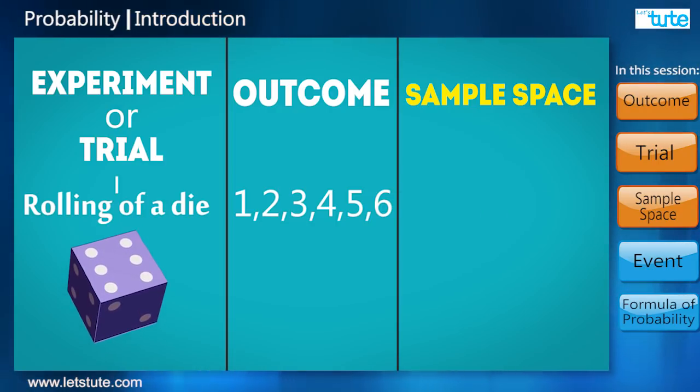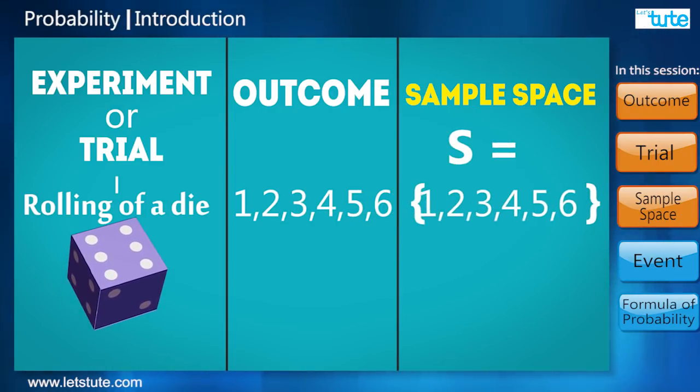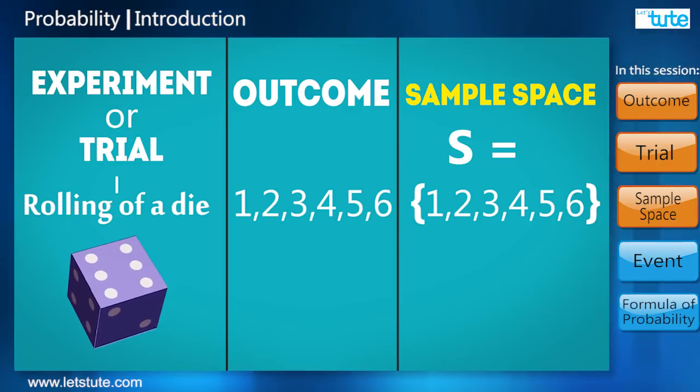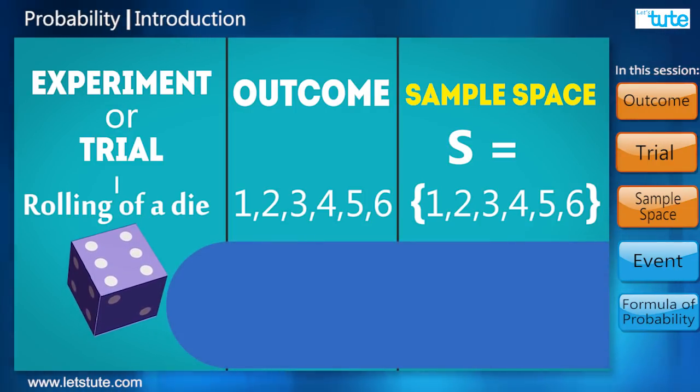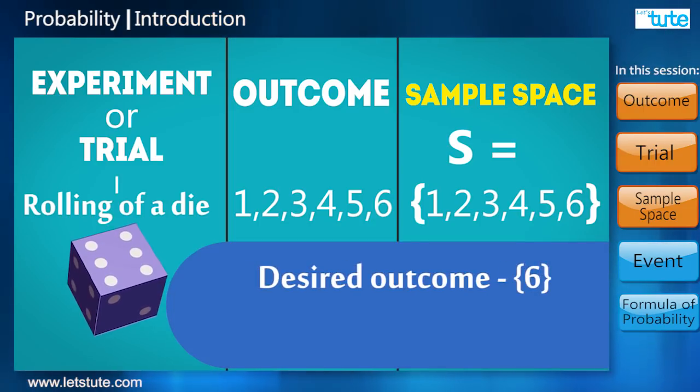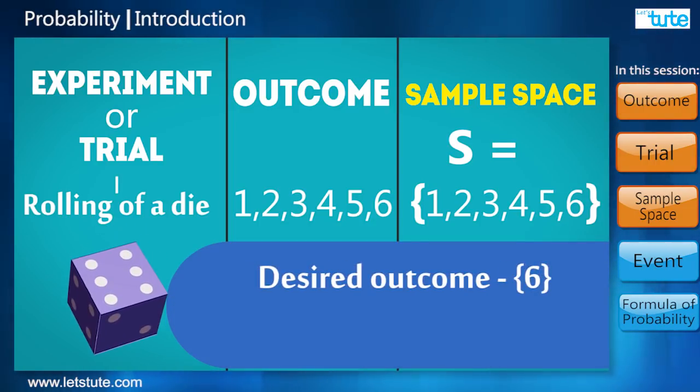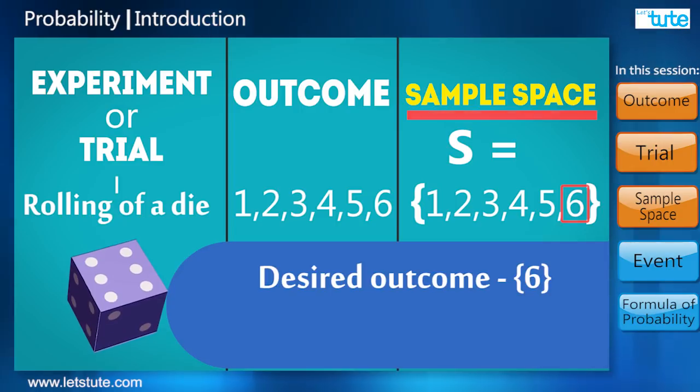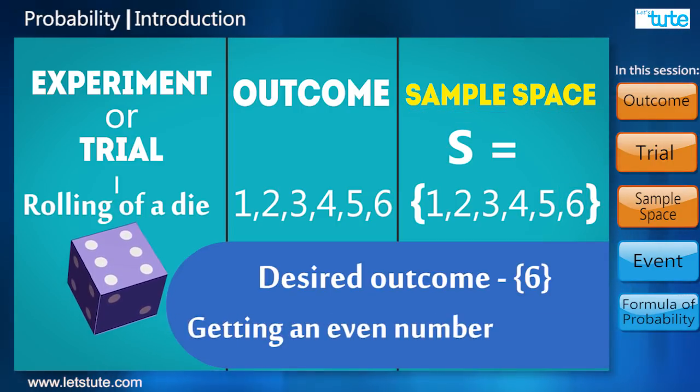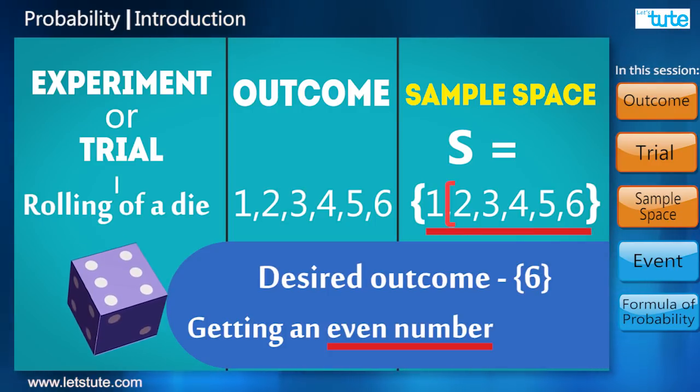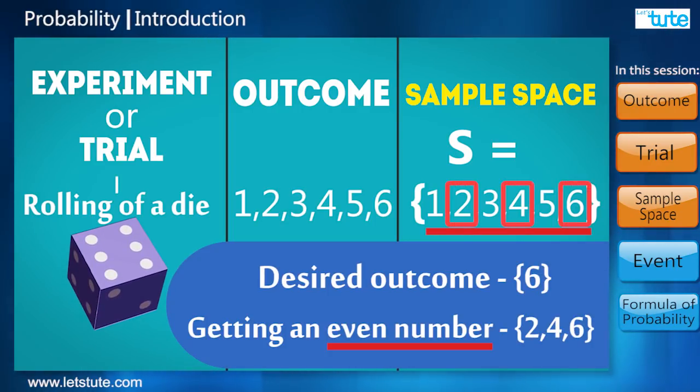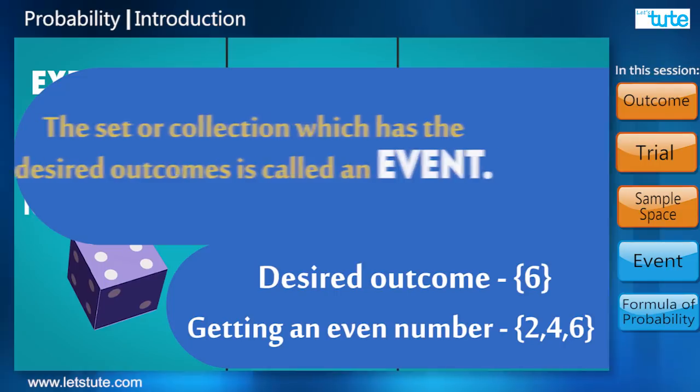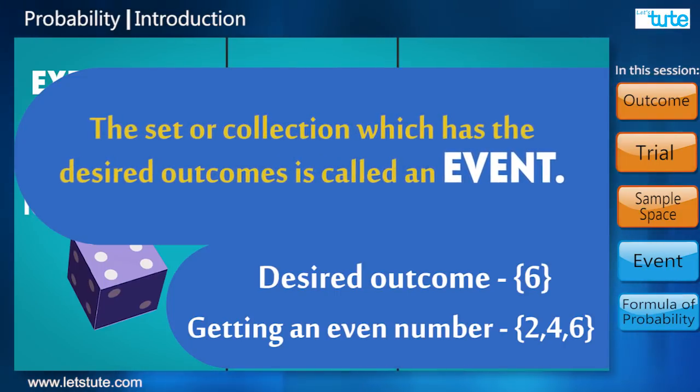When a dice is rolled, a desired result could be something like getting a six, that is just the outcome six in the sample space, or getting an even number, which will have the even numbers from the sample space: two, four, and six. The set or collection which has the desired outcomes is called an event.